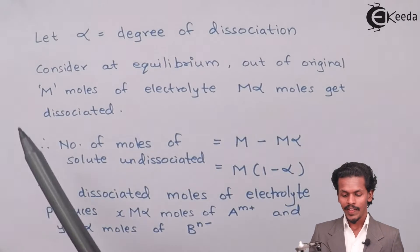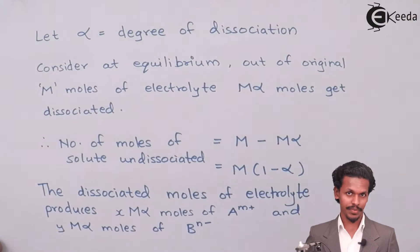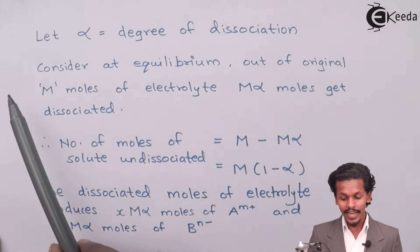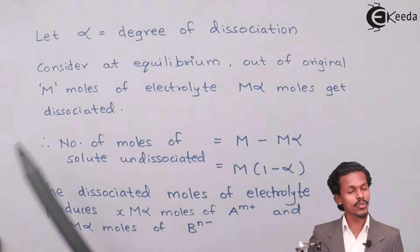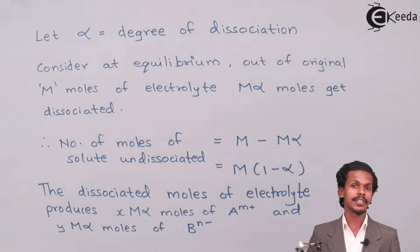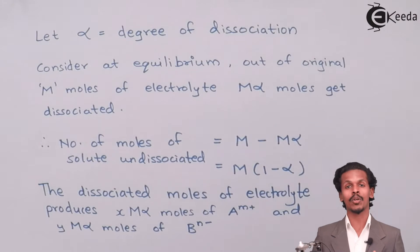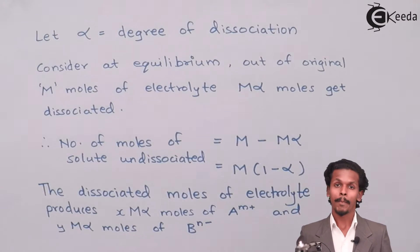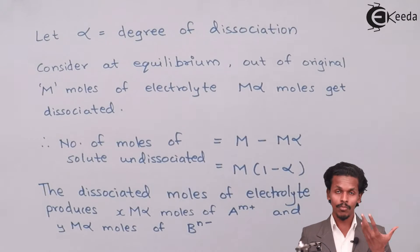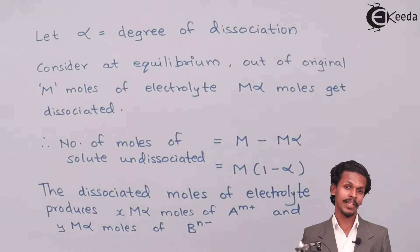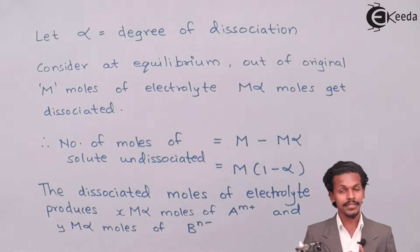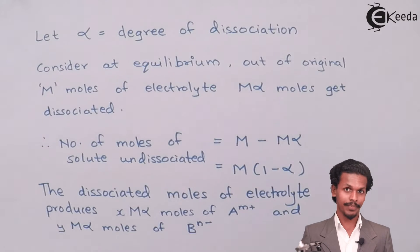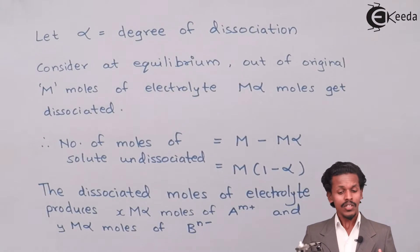Let us denote alpha (α) as the degree of dissociation. Consider that out of the original M moles of electrolyte, M·α moles get dissociated. Suppose we consider M moles of AXBY — since it is an electrolyte it will dissociate, but it is not necessary that every mole dissociates. Some will remain as-is, undissociated, while some will be dissociated.